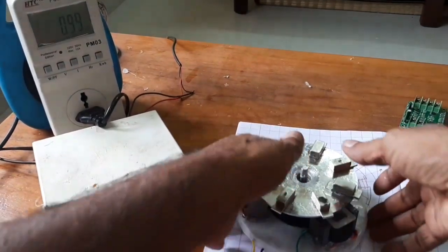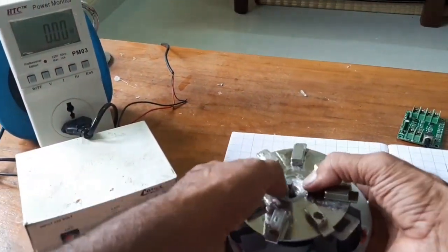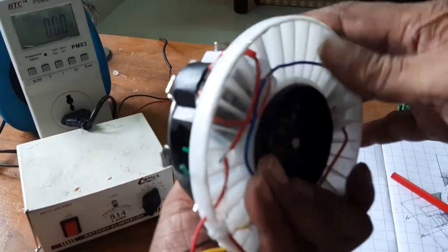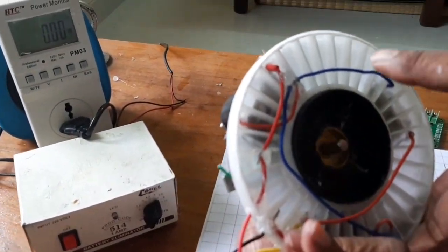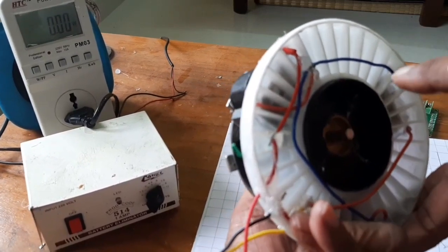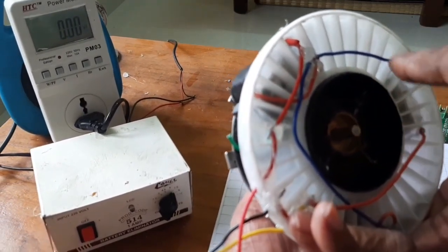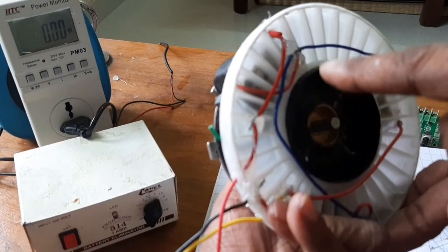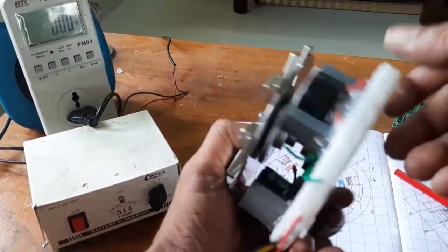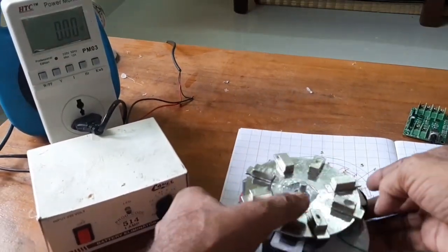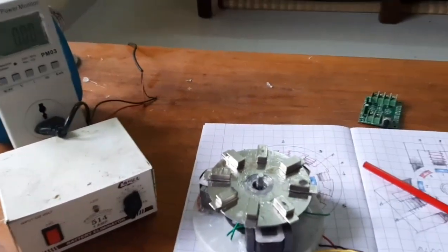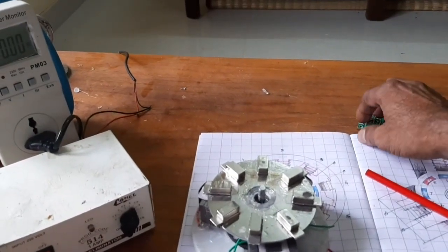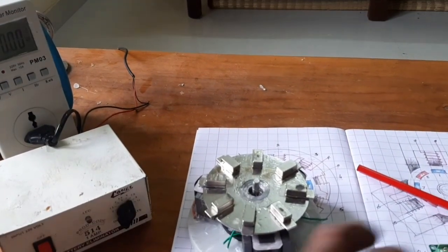Now look at this. The finishing end, three wires are short-circuited by the blue wire, and the other three ends are taken as the source. Now I'm going to connect the BLDC controller.